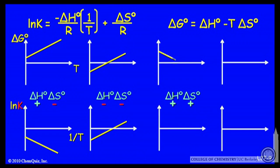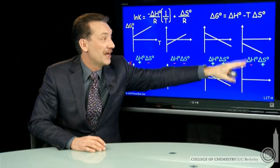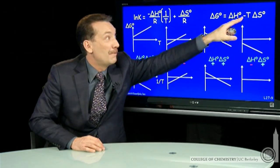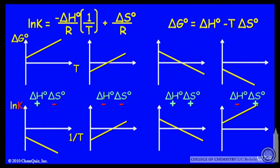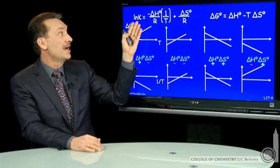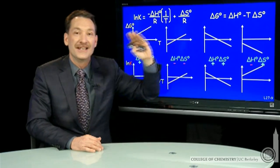For both positive situations, again, these two plots will look qualitatively similar — positive intercepts and negative slopes. What about the last case: delta H negative and delta S positive? Here you'll have, for delta G, a negative intercept corresponding to that negative or exothermic enthalpy, and a negative slope because it's minus T delta S. For ln K versus 1 over T, the intercept is determined by the entropy, which is positive in this case. The slope is determined by the enthalpy with the opposite sign, so negative enthalpy gives a positive slope. That's a summary of the various ln K versus 1 over T and delta G versus T situations.